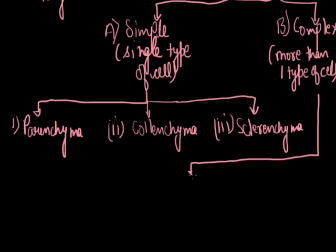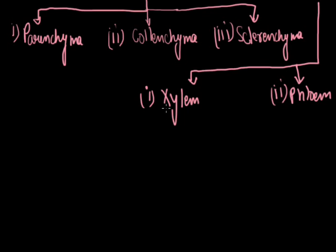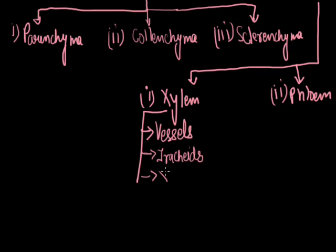Complex tissues are the conducting tissues, which are of two types: xylem and phloem. Xylem is the water-conducting tissue. Xylem is generally dead and consists of four types of cells: vessels, tracheids, xylem parenchyma, and xylem sclerenchyma.